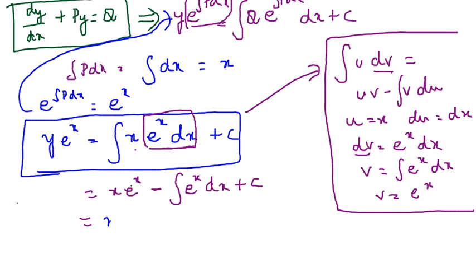So let's write it again: e^x minus integral e^x is again e^x plus c. So let's take e^x outside. So you get x minus 1, have that plus c as it is.